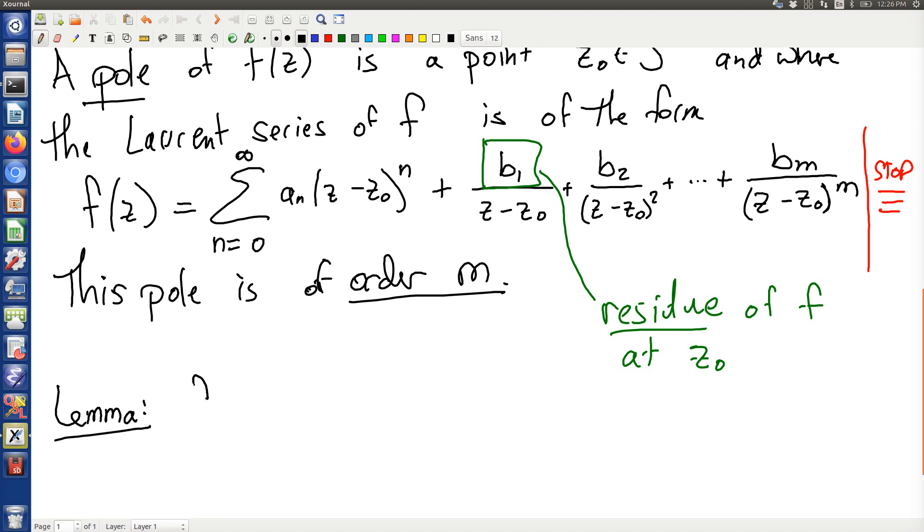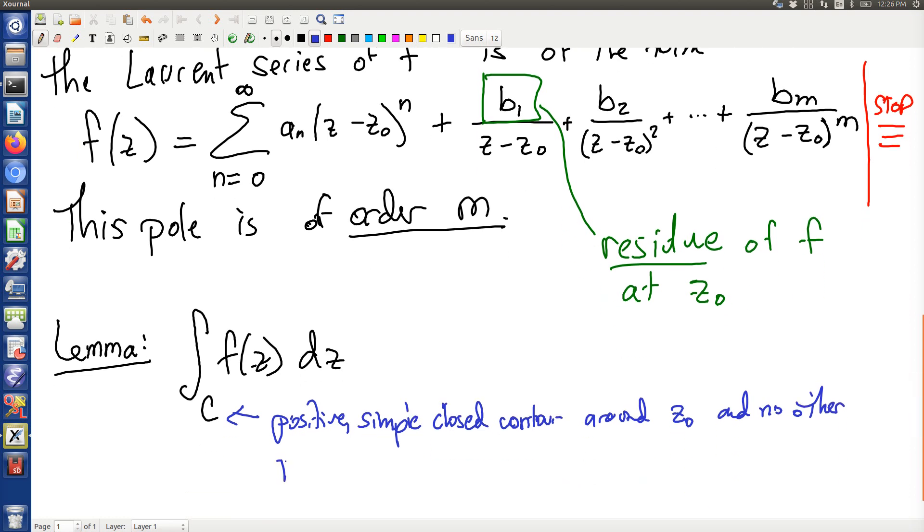The lemma is: if I take the integral around any closed curve, a positive simple closed contour around z₀ and no other point of S, I get 2πi times b₁, the residue. We usually write this as 2πi residue at z₀ of f of z.